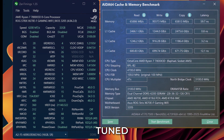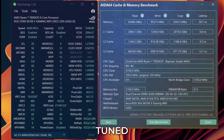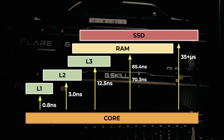My custom profile has much higher timings, higher frequency, and breaks below 60 nanoseconds of latency. Comparing the numbers, EXPO is still about 18% higher latency than my tuning profile, and the default JEDEC is over 40% slower.